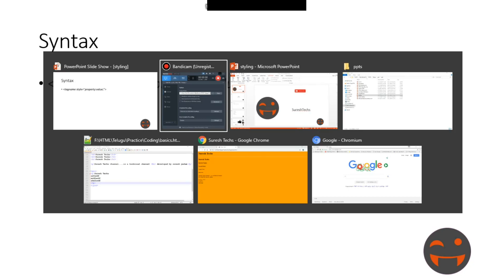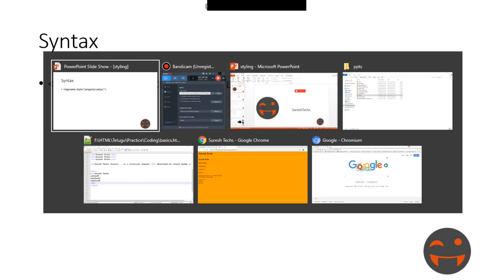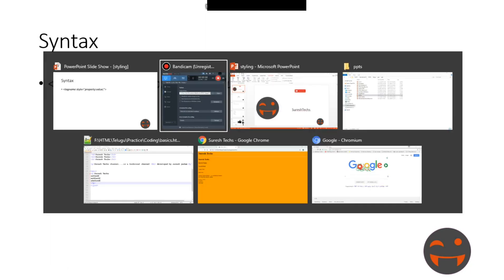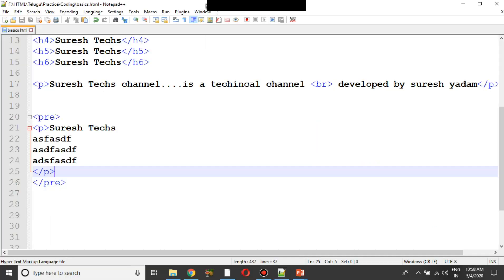We will choose different tags and apply the style attribute. The style attribute takes a property and a value — for example, style and attribute and value.